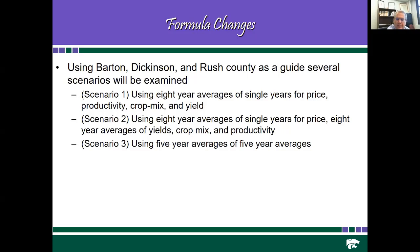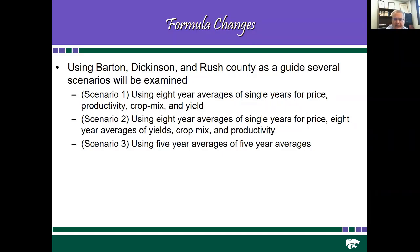Scenario two uses eight-year averages of single years for price — so instead of an eight-year average of an eight-year average of price, we have a single year for price averaged over eight years — but still uses the eight-year average of the eight-year average for yields, crop mix, and productivity. Scenario three shortens the average to a five-year average of five-year averages.